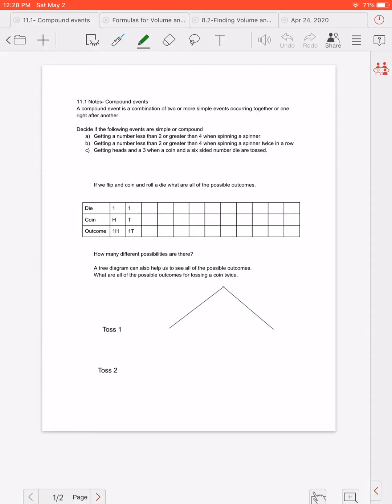Now a compound event is a combination of two or more simple events occurring together or one right after another. So like flipping a coin and rolling a die. Those are two separate events that are happening. Or maybe you picking out a shirt and picking out a pair of pants. That's kind of a compound event. Two separate events kind of coming together or happening one right after another.